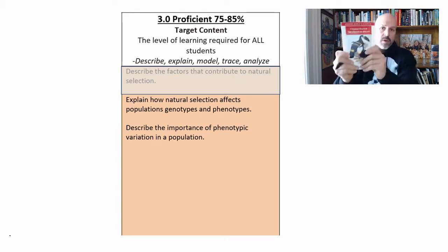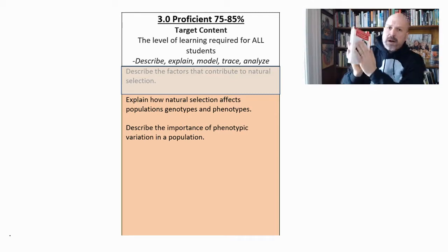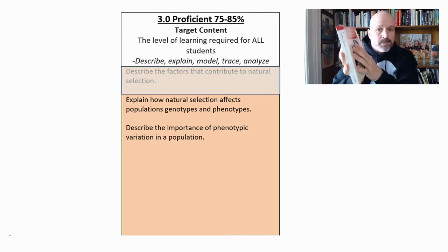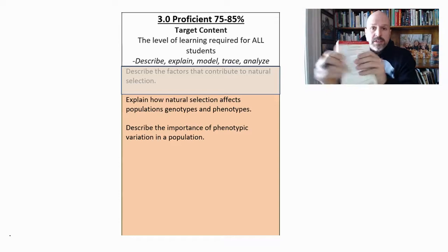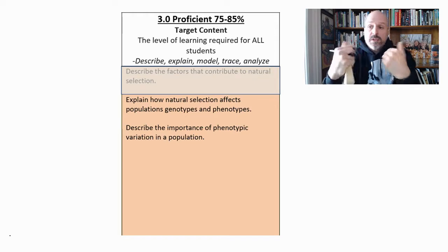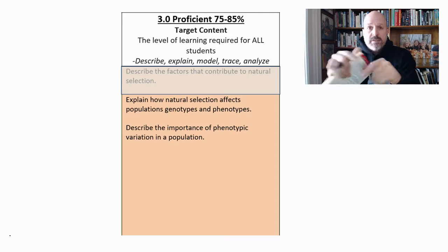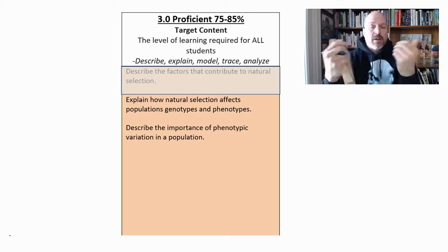Darwin wrote The Origin of Species, and when he did, he spent the first two chapters talking about what we would call artificial selection. There's natural selection, which uses the environment to naturally select which traits are more successful and which aren't, but in artificial selection, you've come to know it as selective breeding. It's when humans get involved, and we act as the gatekeepers of which trait is good and which trait is bad.